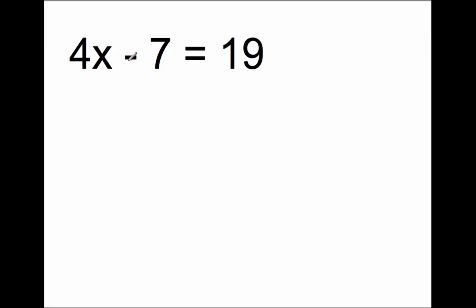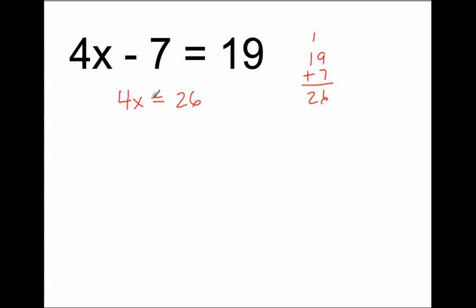We have one more problem: 4x minus 7 equals 19. You might want to pause the video and see if you can solve this on your own, then come back and unpause to check if you have the correct answer and did the proper steps. x is not by itself, so I have to get it by itself using inverse operations. Instead of taking 7 away from 19, I'm going to add 7 to 19. So I have 4x equals 19 plus 7, which is 26.